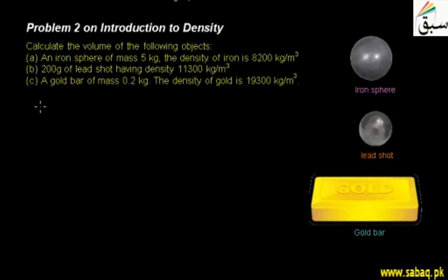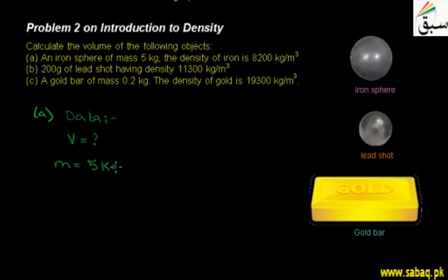Students, first of all we have to collect data in Part A. We will see what we have given and what we have to find out. The unknown quantity is the volume which we have to find out. We have the mass of the iron sphere which is given as 5 kg, and we have the density which is given as 8200 kg per m³.